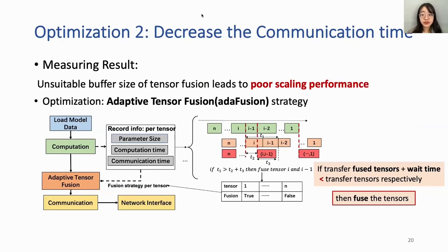The second optimization is to decrease communication time. The diagnosing results show that an unsuitable buffer size for tensor fusion leads to poor scaling performance. We propose adaptive tensor fusion, simplified to ATF fusion. First, after several warm-up iterations, parameter size, computation, and communication time for each tensor or layer are profiled and recorded. Then the ATF fusion scheduler evaluates: if the time of transferring a fused tensor plus wait time is less than transferring tensors separately, then fuse; otherwise, do not fuse. This is the optional adaptive fusion strategy.